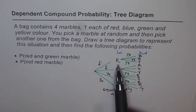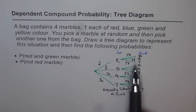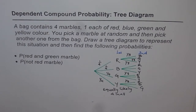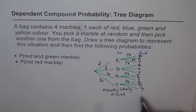Since the first outcome influences the second, it is a dependent event. So with this example you have understood two things: one, it is a compound event because more than one event is involved; and two, the second outcome is dependent on the first, making it a dependent event.